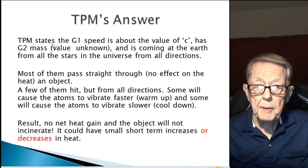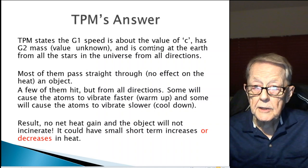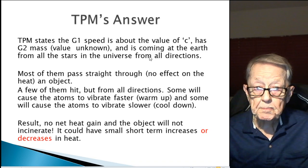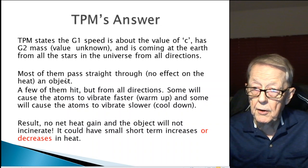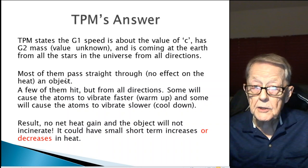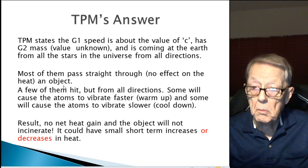The TPM's answer. TPM states that the G1 speed is about the value of C. It has mass, G2 mass. And I don't know the value because there's no standard. And it's coming at the earth from all the stars in the universe from all directions. Now, the first point is the one that they all miss. They think they've got millions and millions of these particles hammering the earth all the time. My work with the Lesage theory indicates that most of them pass straight through. So that no effect on the heat. They just pass through. They're not hitting them.